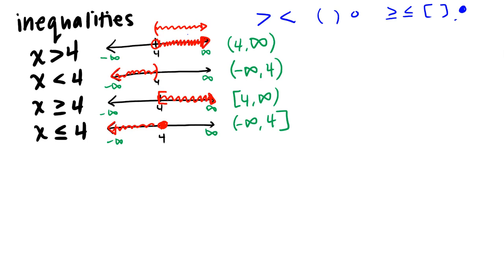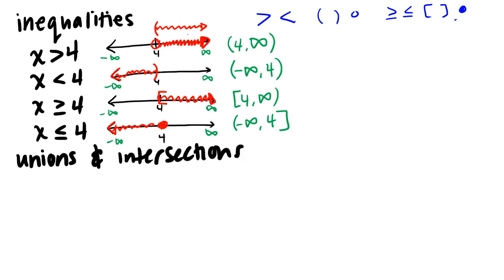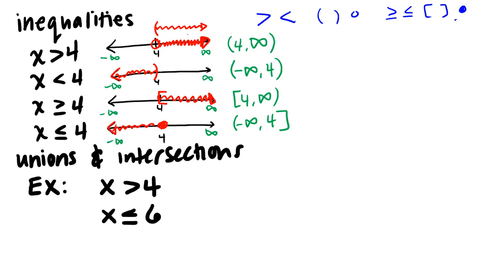Now what we did in class was think about unions and intersections and how they play out when we have two inequalities. Let's go ahead and work with a simple example: x is greater than four and x is less than or equal to six. Let's graphically look at the two of these quickly.